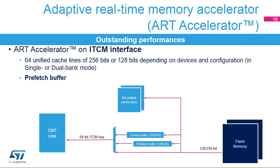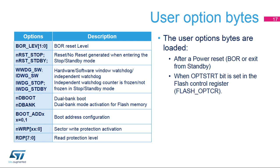The ART Accelerator is available only on the Cortex-M7 ITCM interface. It delivers outstanding performance and reduces cache usage while executing code from Flash Memory. It consists of 64 unified cache lines with 256 or 128-bit width depending on the Flash Memory interface configuration. For each Cortex-M7 fetch, a lookup in the Current Buffer, Prefetch Buffer, and ART Cache is performed. On a hit, data is immediately returned to the CPU. On a miss, the Cortex-M7 processor takes data directly from Flash Memory; in parallel, the Flash Memory line is copied into the Current Buffer and ART Cache if enabled. If Prefetch is enabled, another Flash Memory access fills the prefetch buffer with sequential data.